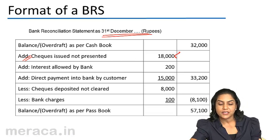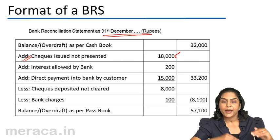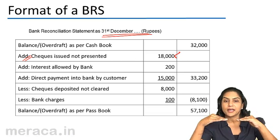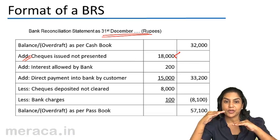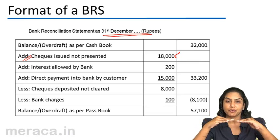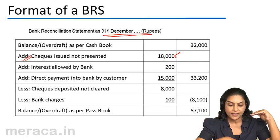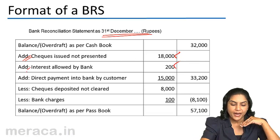What about interest allowed by the bank? When the bank allowed interest, the passbook balance went up. The cashbook is here. We have started from the cashbook and we are trying to reach the passbook. Therefore, we have added interest allowed by the bank.